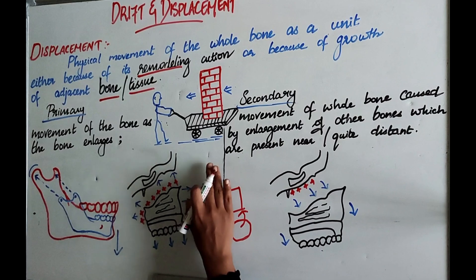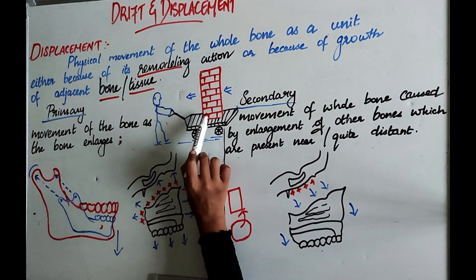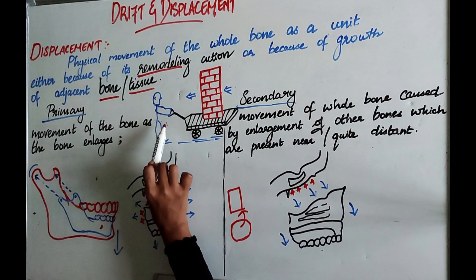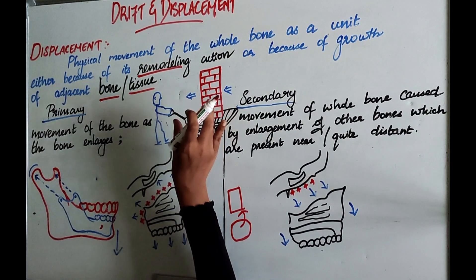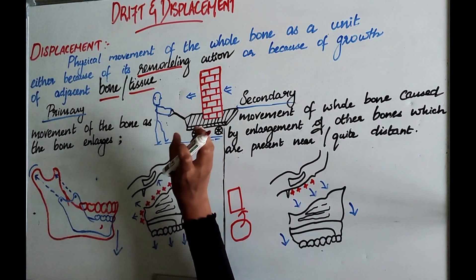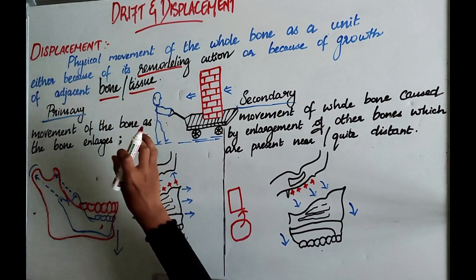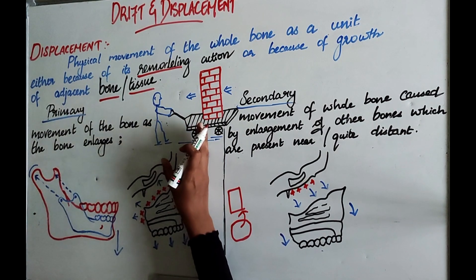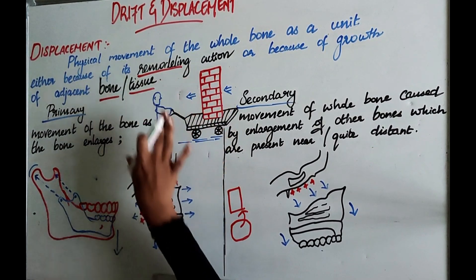We have a diagram which represents displacement. Here we can see a brick being moved with the help of a person — it is being moved as a whole unit. We will consider the brick as the bone, and similarly the bone will be moved with the help of another bone or tissue. There will be movement of the bone caused by another bone or tissue — that is displacement.